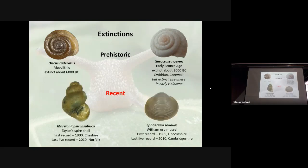There are other recent extinctions, which are certainly much more worrying. Clearly we can't do anything about something that happened thousands of years ago. But here are one or two examples. One is a little spire shell — both freshwater species — first recorded in Cheshire in 1900, with the last live record in Norfolk in 2010. Another tiny little bivalve was also last recorded in 2010. Whether that's pollution or other changes, I don't know — I don't think anybody knows the answer.